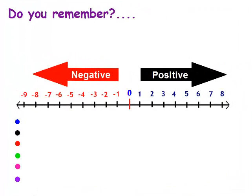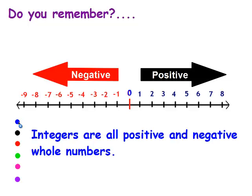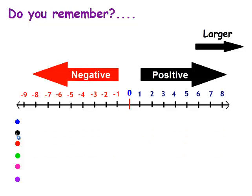Let's review a little bit. Remember that integers are all positive and negative whole numbers. The farther to the right you go on a number line, the larger the number. The farther to the left you go on a number line, the smaller the number.